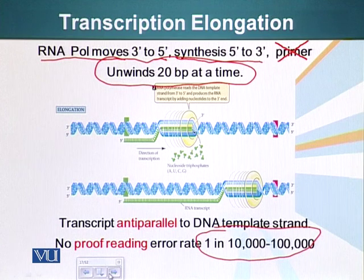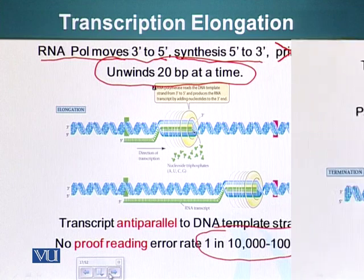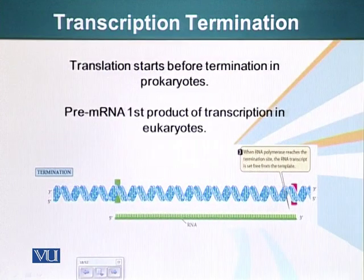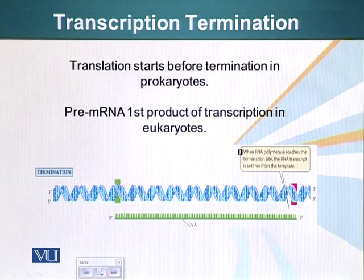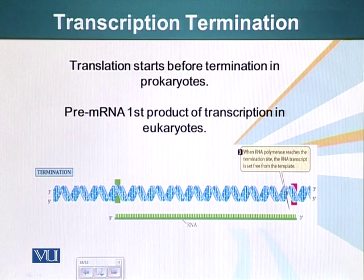Once the RNA polymerase has made the RNA, it encounters the termination site. The termination site is also a sequence of nucleotides that tells RNA polymerase to stop the transcription process.